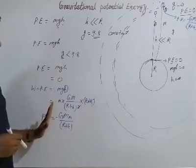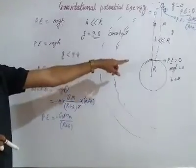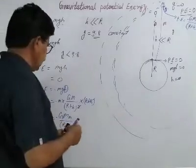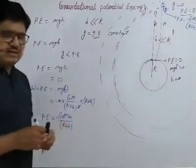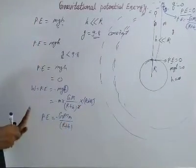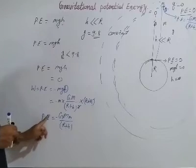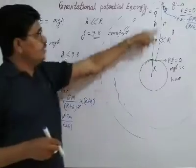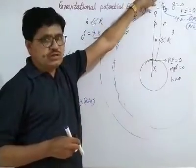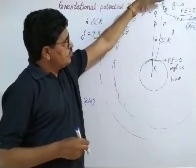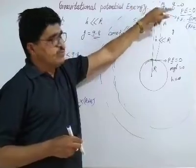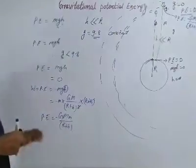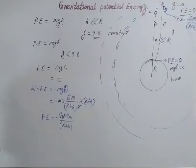On the surface of the earth the assumed potential energy is zero, but the actual potential energy on the surface of the earth will be discussed in the next topic. The actual potential energy formula is minus G M m divided by (R + h), and where g equals zero the potential energy is also zero. Today we will stop here.